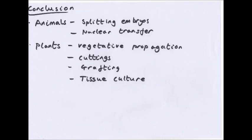To summarise, there are six ways of cloning: asexual reproduction naturally; splitting embryos in animals and nuclear transfer, which are artificial; natural vegetative propagation in plants; and cuttings, grafting, and tissue culture, which are artificial plant methods. Thank you for watching — leave comments, email, like, subscribe, and goodbye.